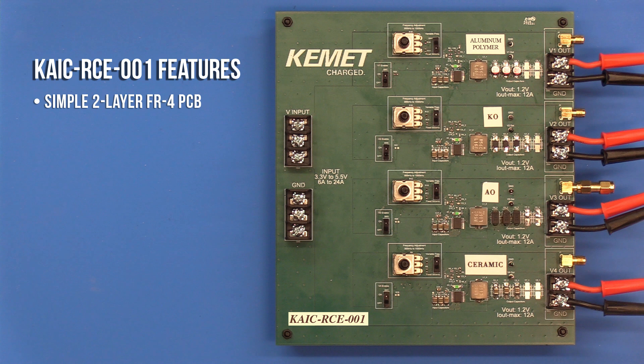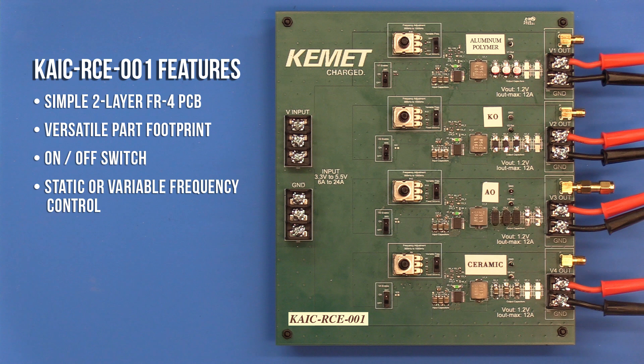The KAIC board is a two-layer FR4 board with the flexibility to solder on many different types of capacitor technologies, an on and off switch, power status LED, and the option to choose a fixed switching frequency or a variable switching frequency. All this repeated four times.